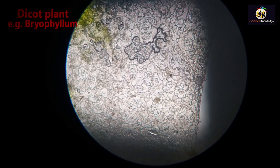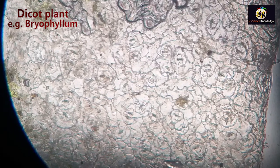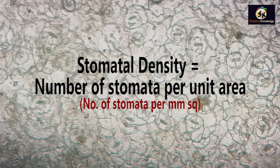In dicots the stomata are scattered, so we have to take a photograph of this view and then manually we can measure the number of stomata. This number of stomata per unit area is called stomatal density.